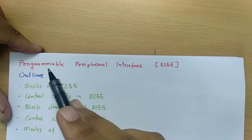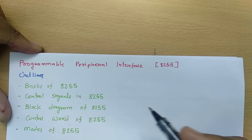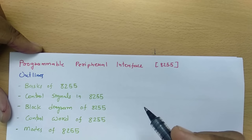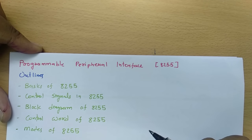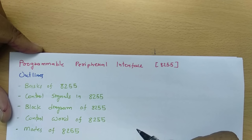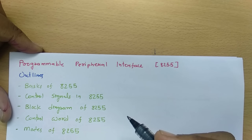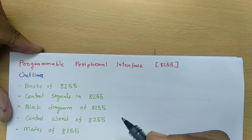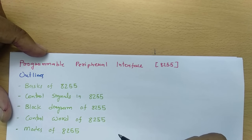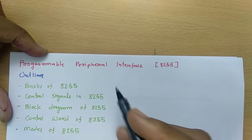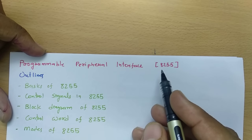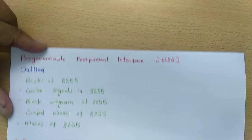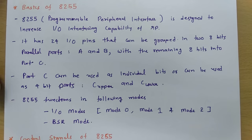8255 is a Programmable Peripheral Interface IC that we utilize to increase the input-output interfacing capability of a basic level microprocessor. Initially with the 8085 microprocessor, Intel was facing difficulty in terms of input-output interfacing capability because there were limited address and data buses. So to increase its interfacing capability, the 8255 IC was introduced.